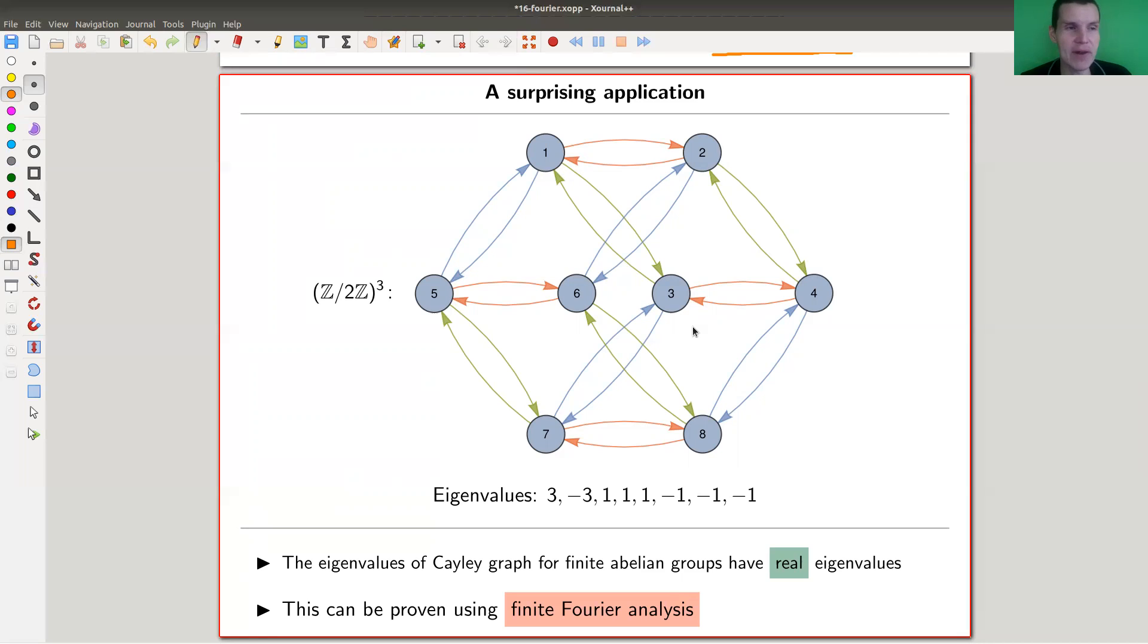Eigenvalues in general have no reason to be real numbers - why should they. But eigenvalues of Cayley graphs are always real numbers. That's not really super easy to see, and it's a funny application of finite Fourier analysis.